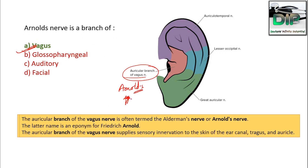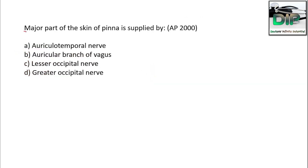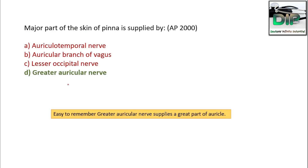The auricular branch of vagus supplies innervation to the skin of the ear canal, tragus, and auricle. The major part of the skin of the pinna is supplied by the greater auricular nerve — a simple way to remember: the greater auricular nerve supplies the greater part of the auricle.